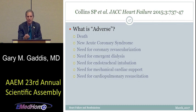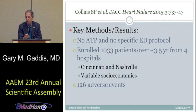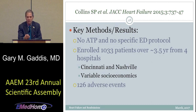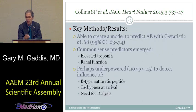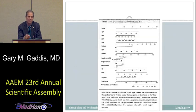They enrolled over 1,000 patients in three and a half years, predominantly in hospitals in the Cincinnati and Nashville area, and documented 126 adverse events. Common sense predictors emerged like troponin level and renal function level, but they couldn't detect an improvement in the rule if they added BNP, tachypnea at arrival, or need for dialysis. So this rule flies in the face of common sense — some things you'd think were important weren't.